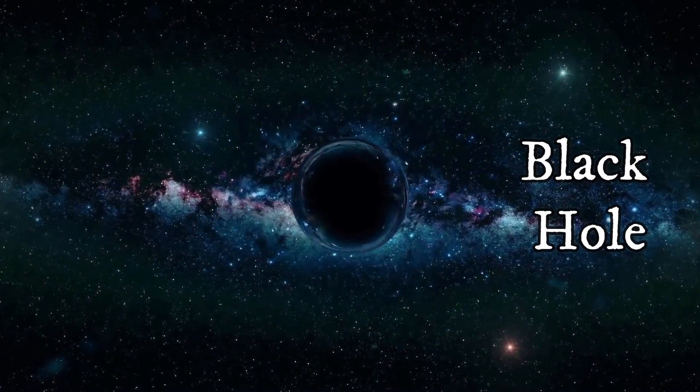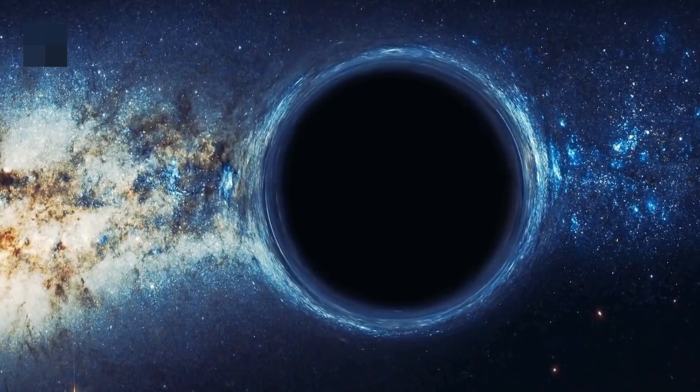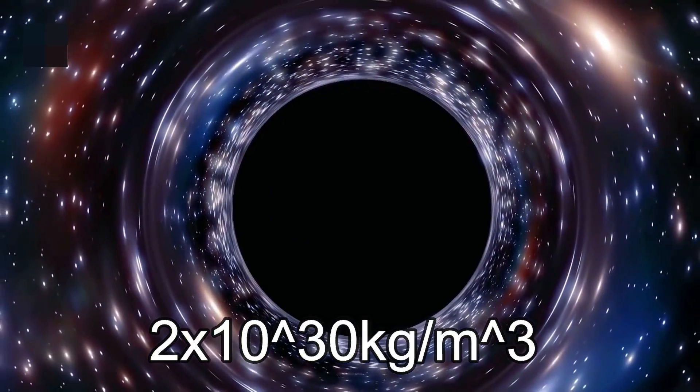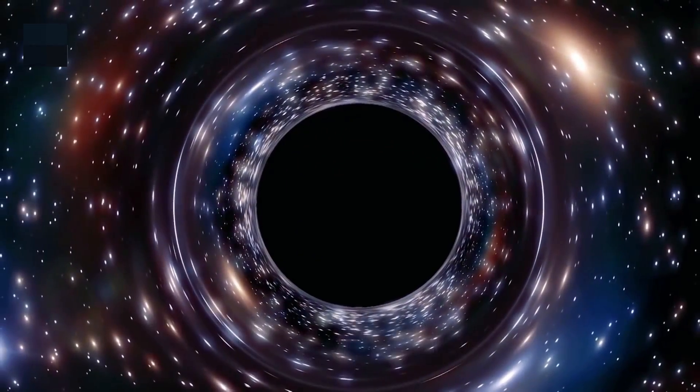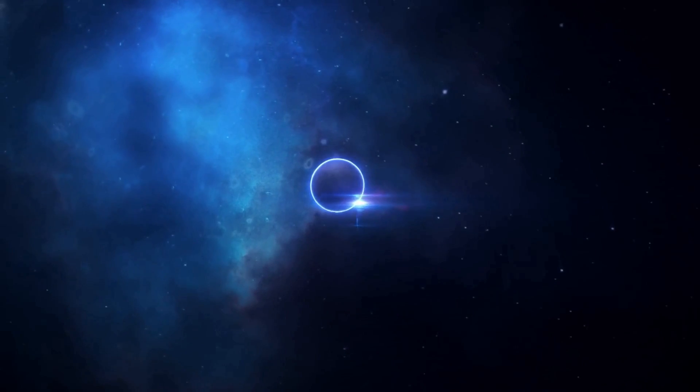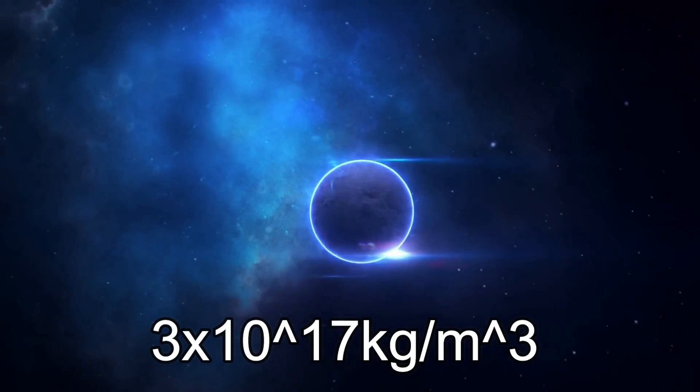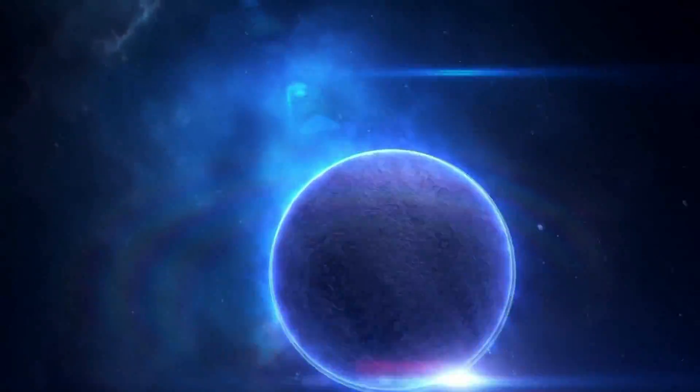A black hole is formed. A black hole has a density of about 2 x 10 to the power 30 kg per meter cube, and on the other hand, a neutron star has a density of about 3 x 10 to the power 17 kg per meter cube.